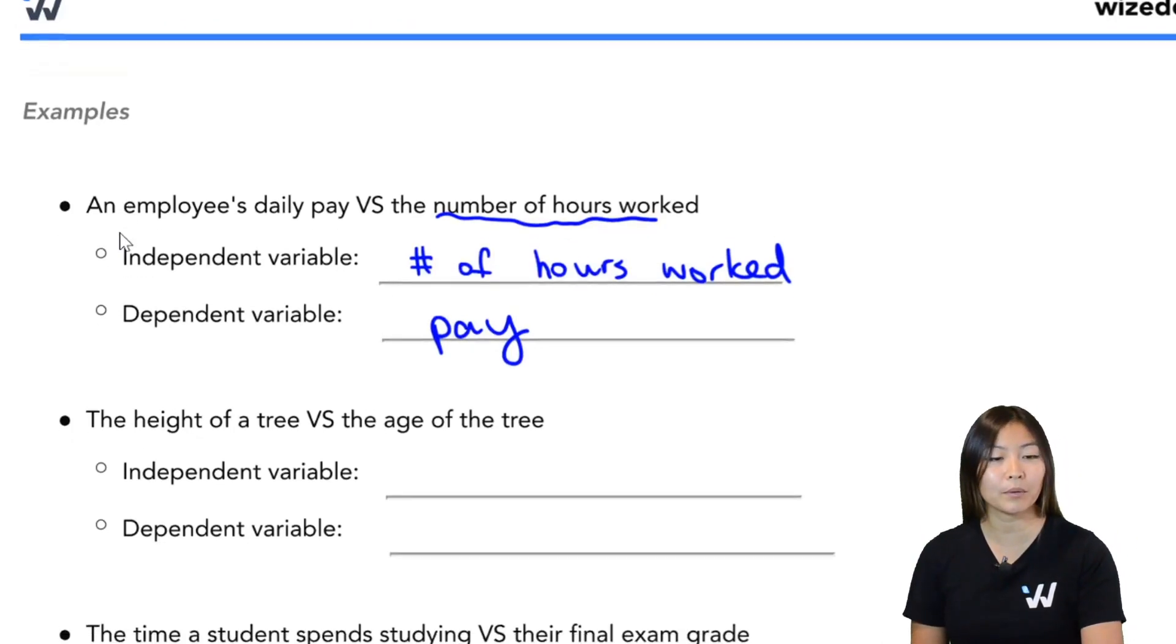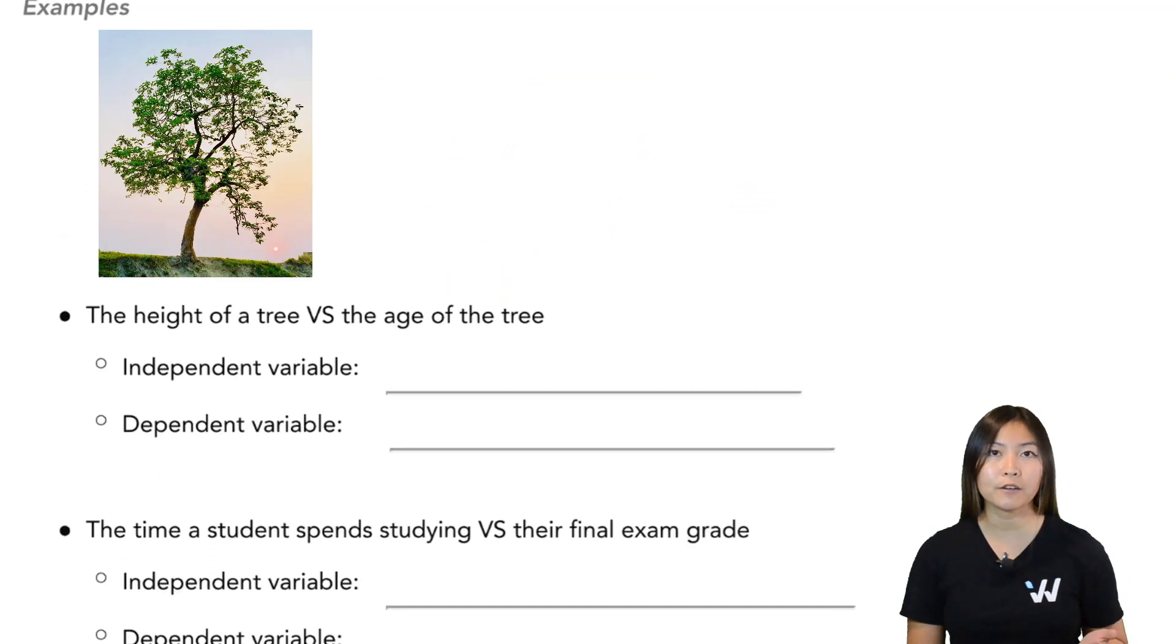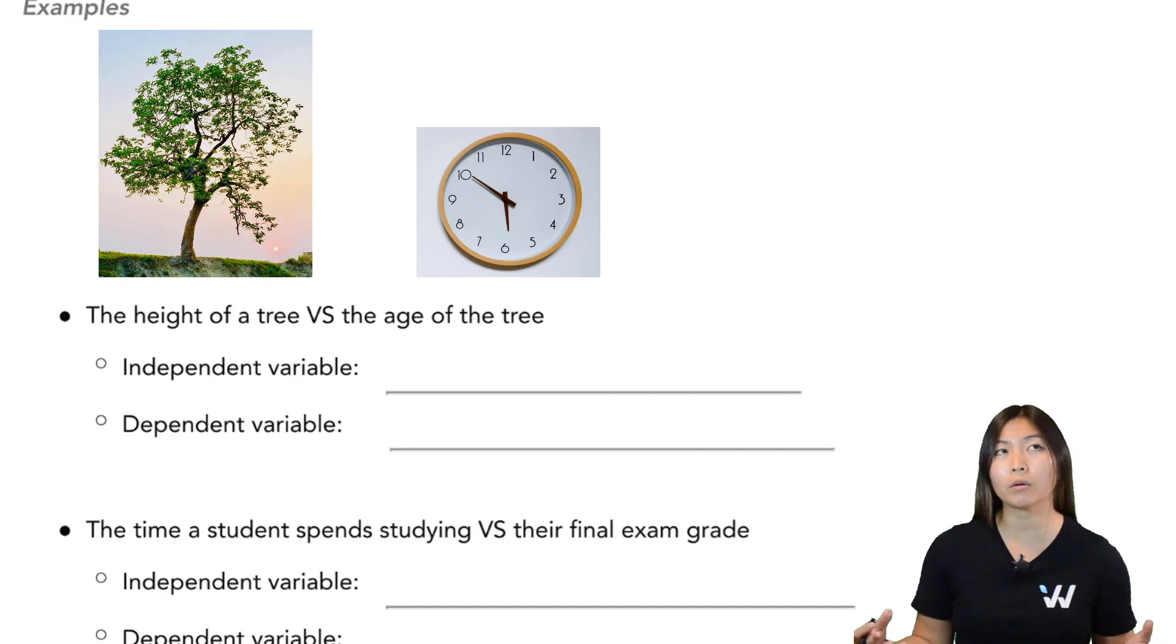Now let's take a look at the second example. We have the height of the tree versus the age of the tree. Now, does the height of something depend on how old they are? Or does how old they are depend on the height?